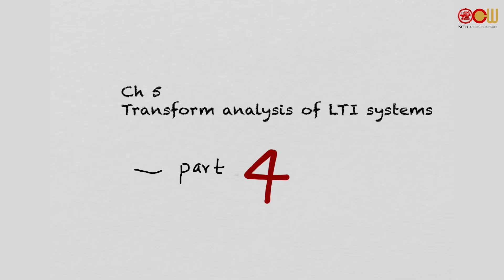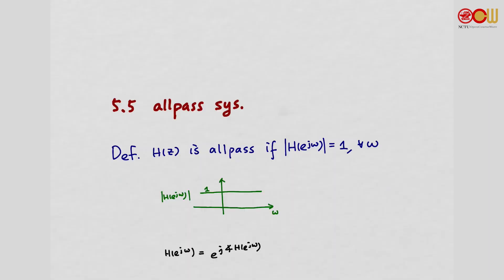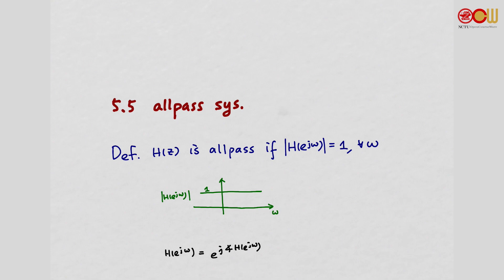Transformed analysis of LTI systems, part 4. First, let's talk about all-pass systems. We say H is an all-pass system if the magnitude response of H is equal to 1 for all omega. So if we plot the magnitude response, it is simply a constant and does not vary with frequency.